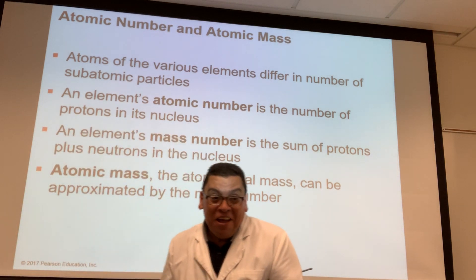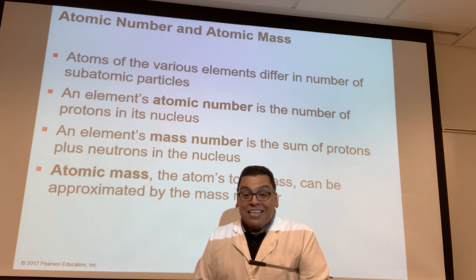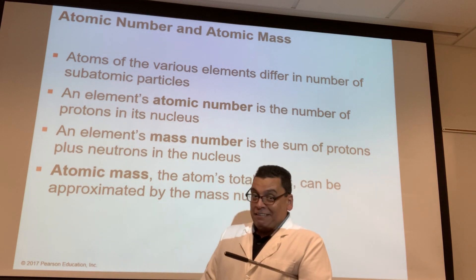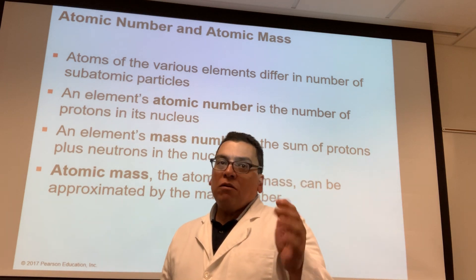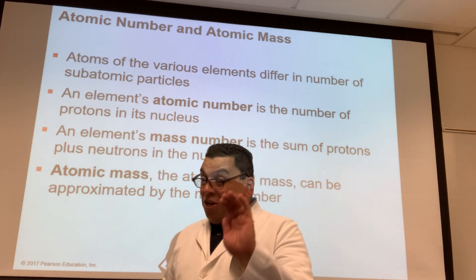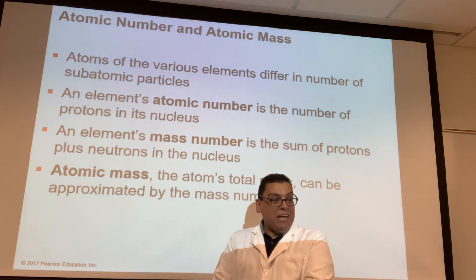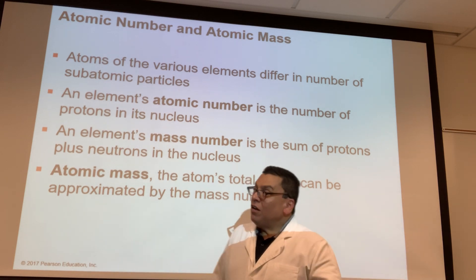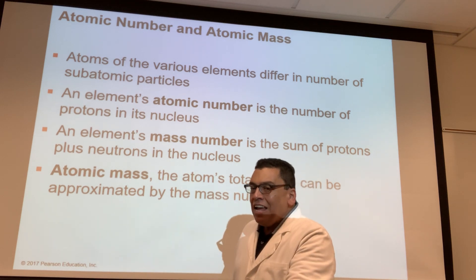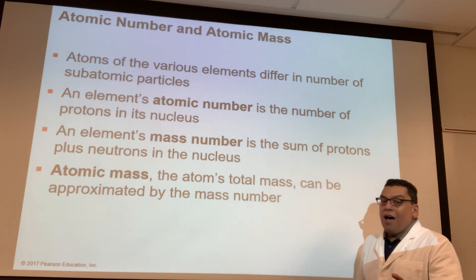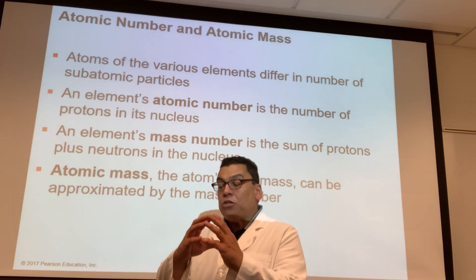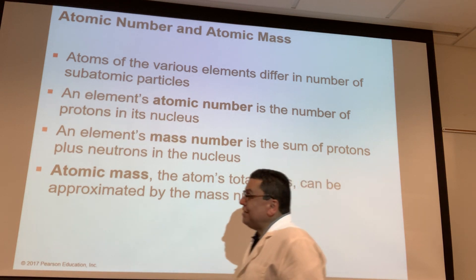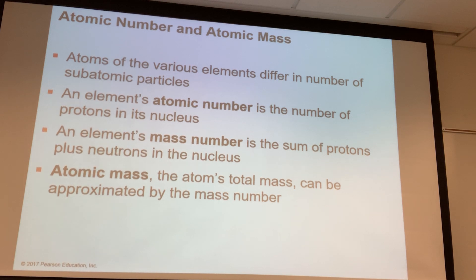So if I say, hey, I discovered a new element, and you ask how many protons it has and I say 6 — you're going to tell me that's not new, that's carbon. Because only carbon has 6 protons. This is similar to your social security number — only you have that number. The atomic number identifies the element. And the atomic number is the number of protons. The mass number is the combination of protons plus neutrons.